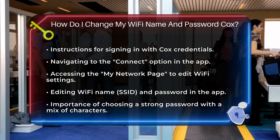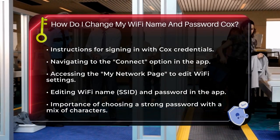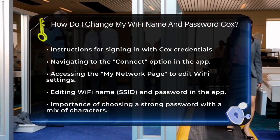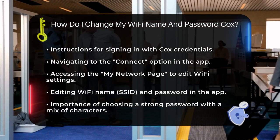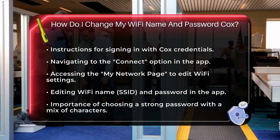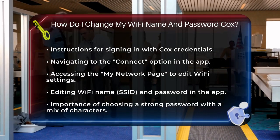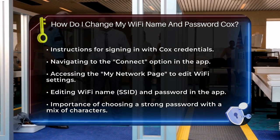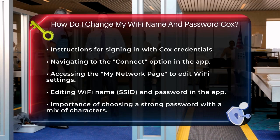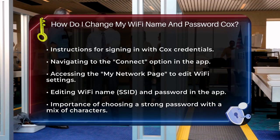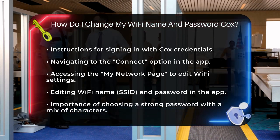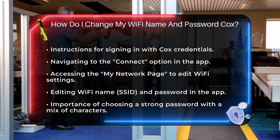Here, you'll see a pencil icon at the top right corner. Tap on this to edit your Wi-Fi settings. In the Edit Wi-Fi Settings screen, you can change both your Wi-Fi name (SSID) and your Wi-Fi password. Just enter your new Wi-Fi name in the Wi-Fi name field and your new password in the Wi-Fi password field.